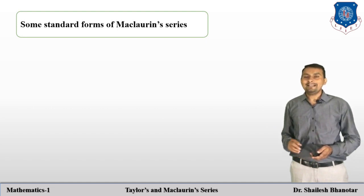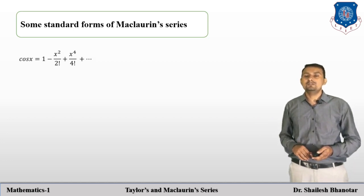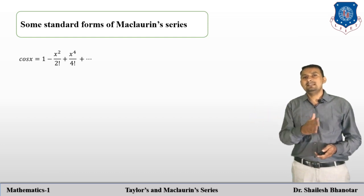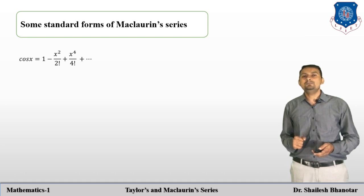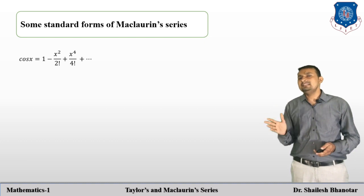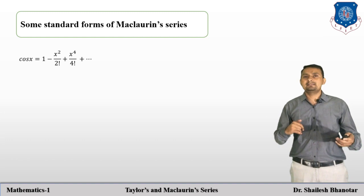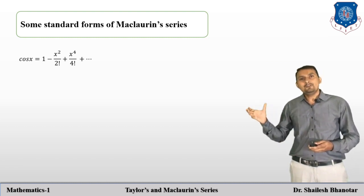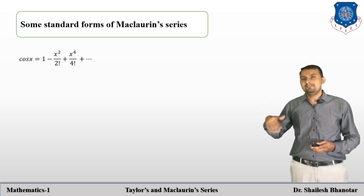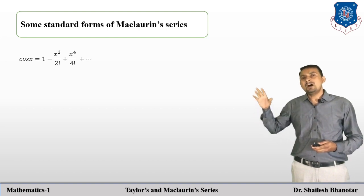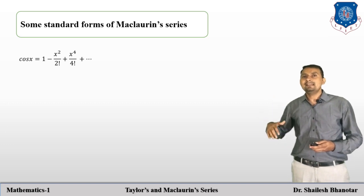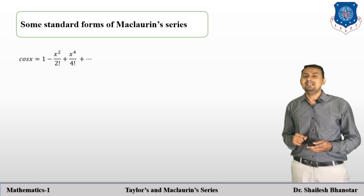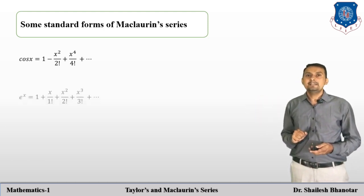There are also standard Maclaurin series forms. For cos x: 1 − x²/2! + x⁴/4! + ... To prove this, we set f(x) = cos x and determine f(0), f'(0), f''(0), and so on. After substituting into the Maclaurin series expansion and simplifying, we get cos x = 1 − x²/2! + x⁴/4! + and so on.